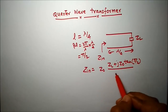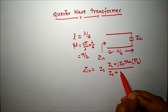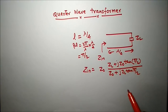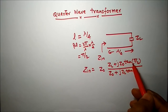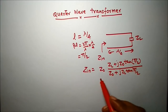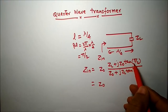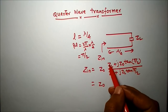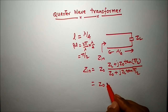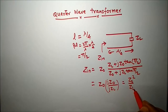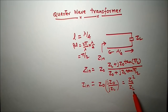So tan(π/2) appears in the expression, and we know that tan(π/2) is infinite. Dividing numerator and denominator by tan(π/2), the terms with tan(π/2) in the denominator go to zero, leaving jZ0 divided by jZL in the numerator, which simplifies to Z0² divided by ZL.